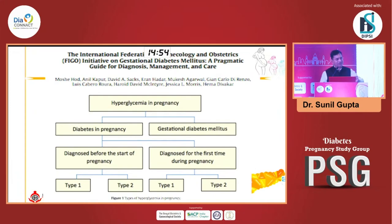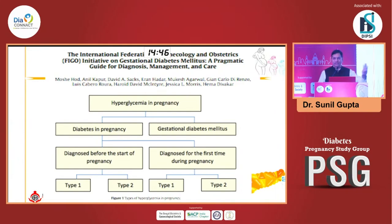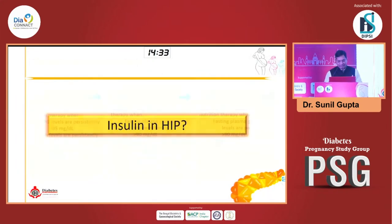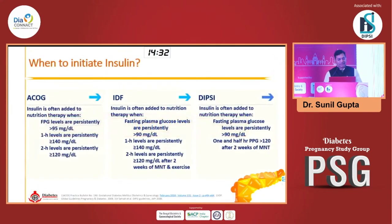Assess the situation. If HbA1c is higher and fasting is higher, someone presenting to you with late pregnancy — don't wait for medical nutrition therapy, start pharmacotherapy straight away, whatever you choose. We have medical nutrition therapy and exercise as lifestyle intervention, and insulin. I will directly jump to insulin.